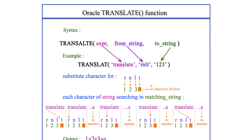Since TRANSLATE is a character-based replacement, let's look at the output. From the from_string we have 't' but no to_string value for it, so we won't get 't' in the output. For 'r' we specified '1' as the replacement, so we get '1' in the output.